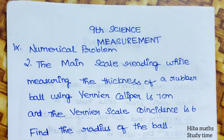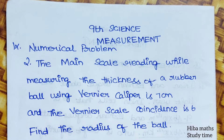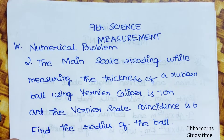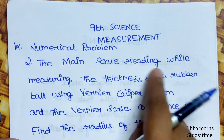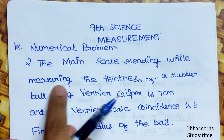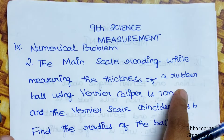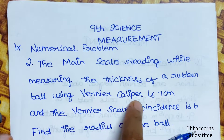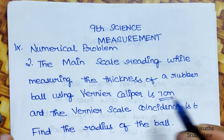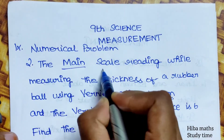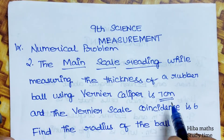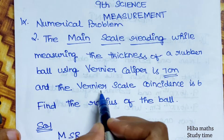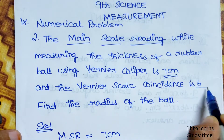Hello friends, welcome to Hiba Max Study Time, 9th Standard Max Measurement. Second question: the main scale reading while measuring the thickness of a rubber ball using a vernier caliper is 7 cm. Main scale reading MSR is 7 cm and the vernier scale coincidence is 6.